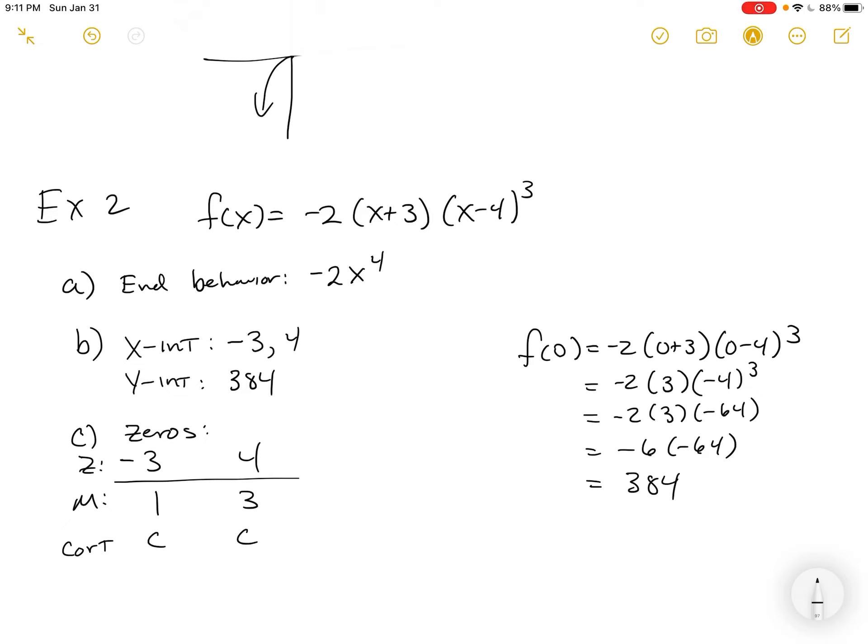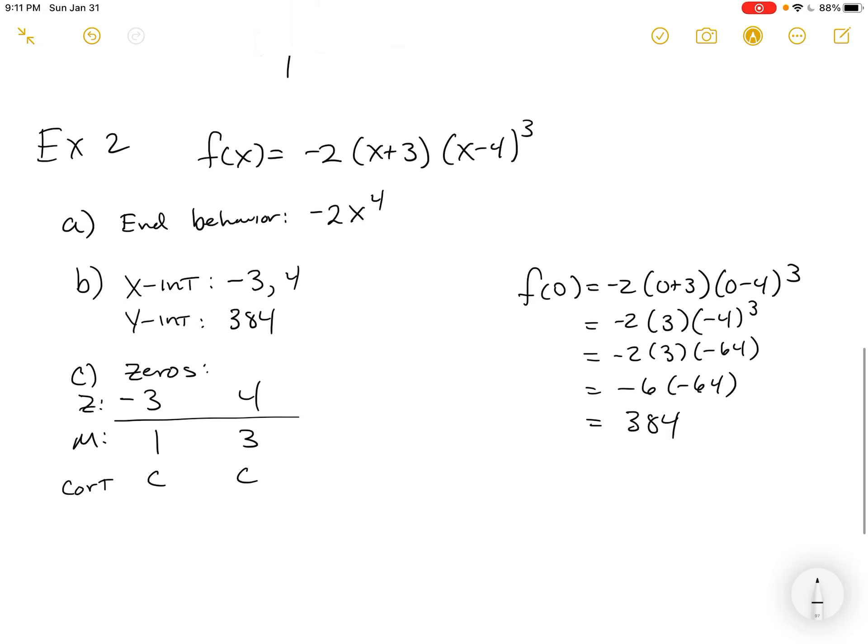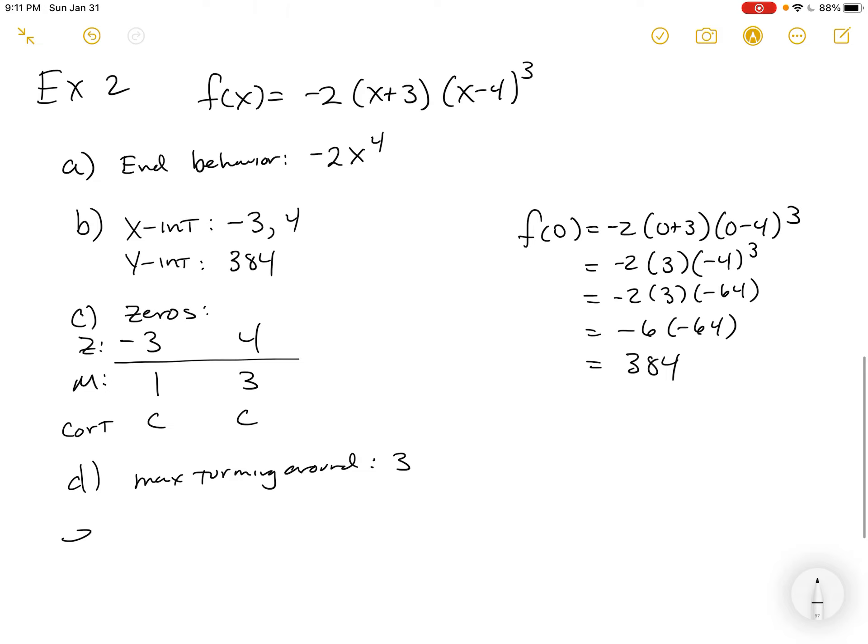It does not bounce off. It goes through those guys. The maximum number of turning points is 1 degree less. So, for d, the max turning around is 3, because it's a degree 4 polynomial. And e's the graph.